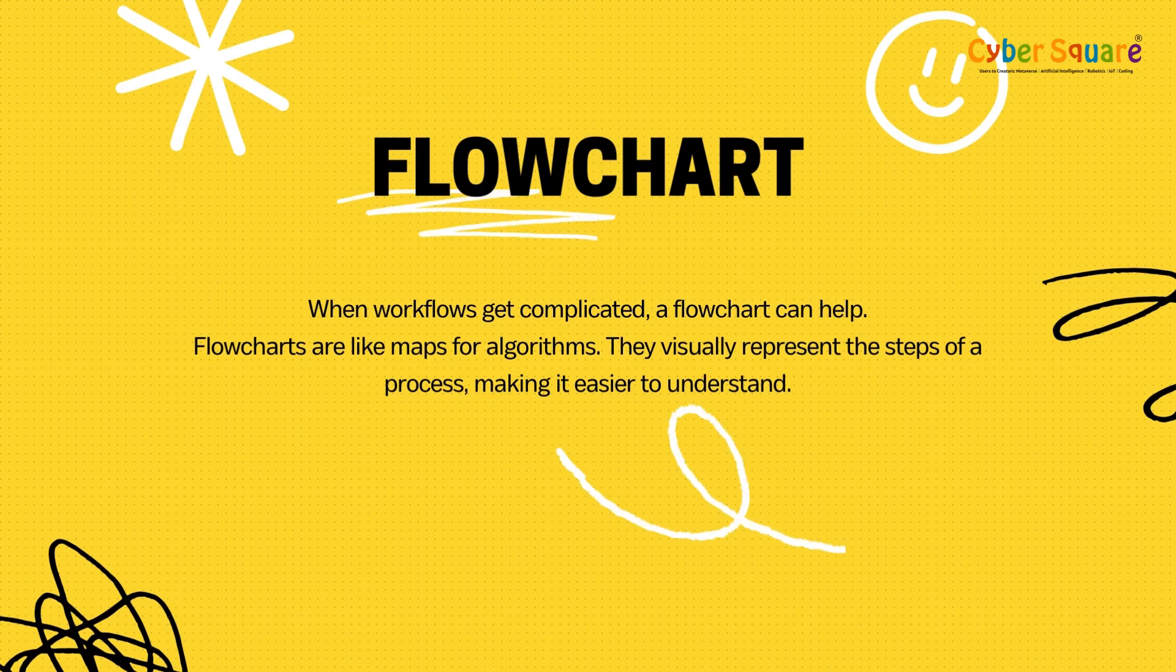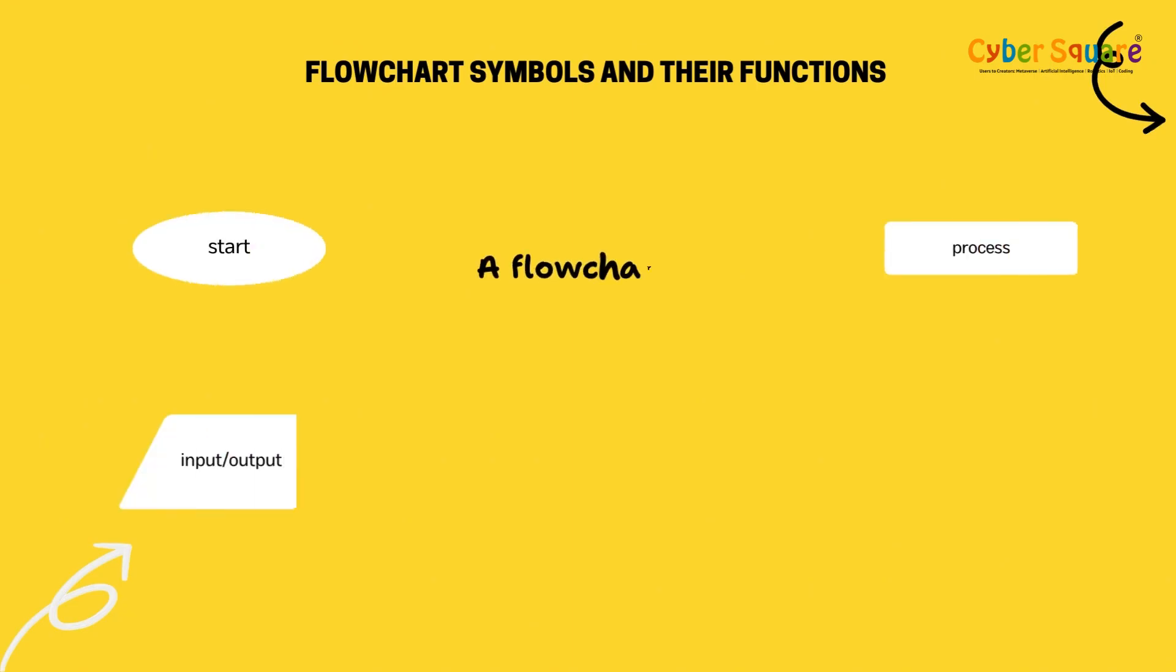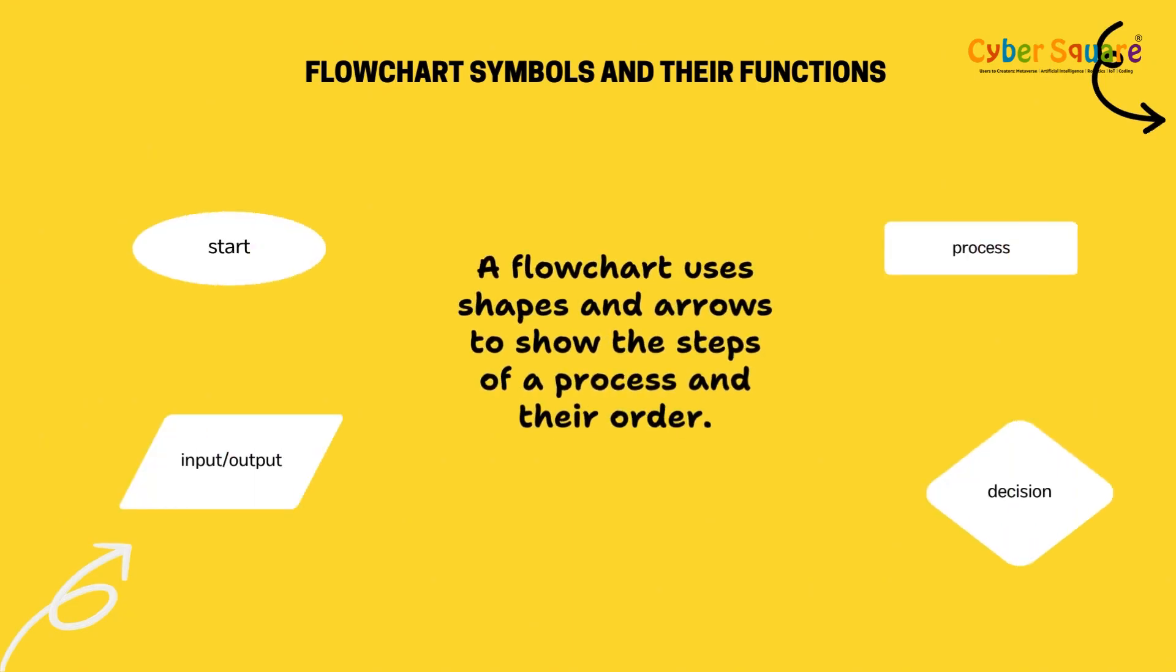Flowcharts are like maps for algorithms. They visually represent the steps of a process, making it easier to understand. A flowchart uses shapes and arrows to show the steps of a process and their order.